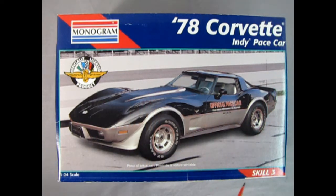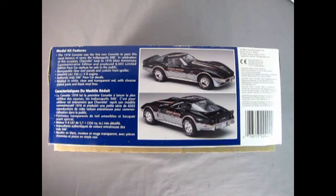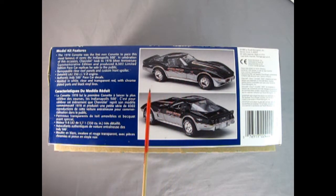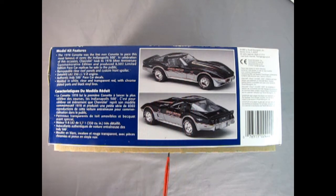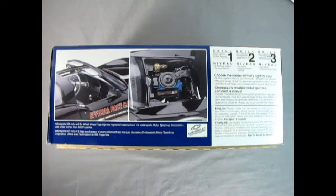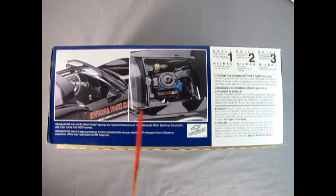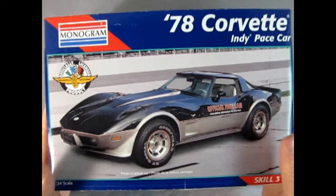Monogram's 1978 Corvette Indy Pace Car is a 1:24 scale model kit with a skill level 3 rating. On this side of the box we see our model kit features which include removable clear roof panels, detailed 350 cubic inch engine, and authentic Indy 500 Pace Car decals. There's the side of our car from the front three-quarter and the rear three-quarters, and on this side of the box we get a wonderful view of the interior as well as a 350 Chevy Corvette motor.